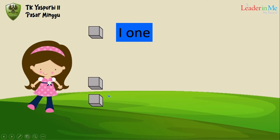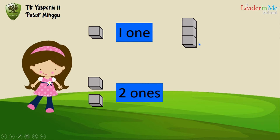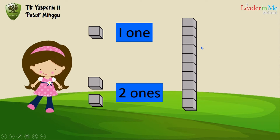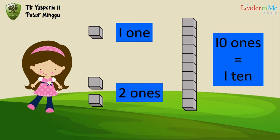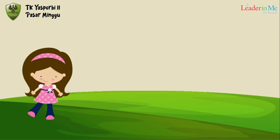Two cubes means two ones. And how about this one? Let's count: one, two, three, four, five, six, seven, eight, nine, ten. Ten cubes means ten ones, or one ten. Okay, next.